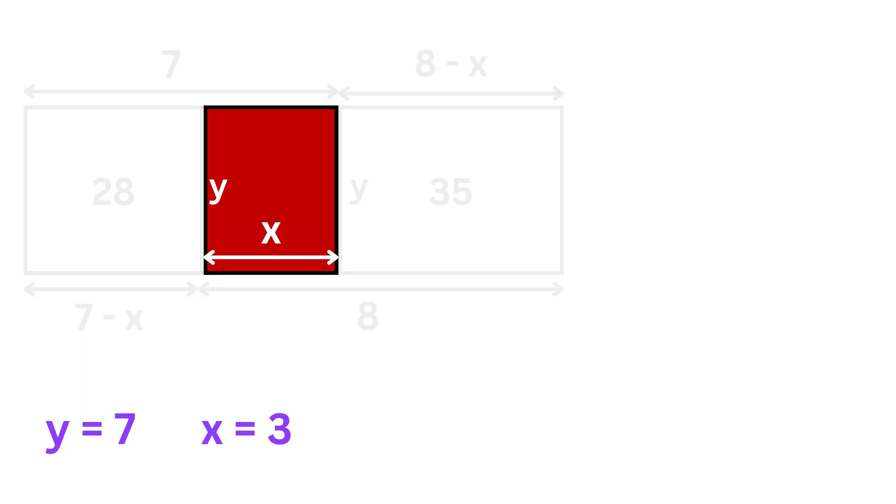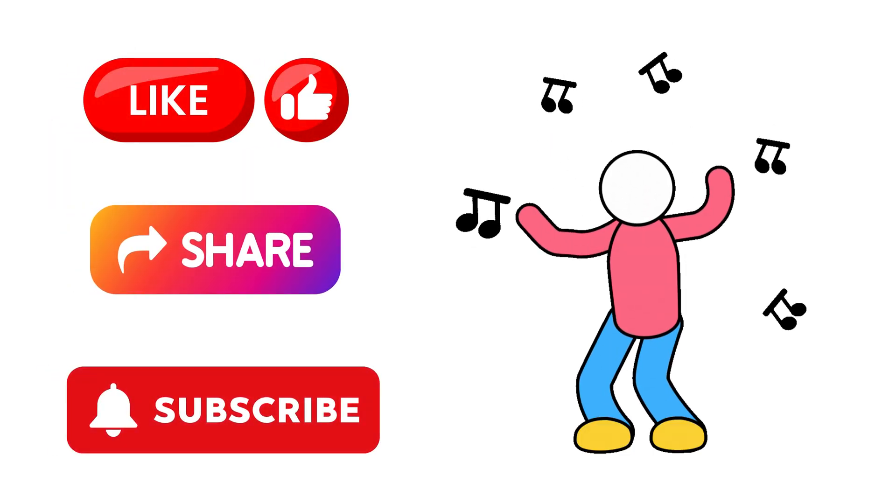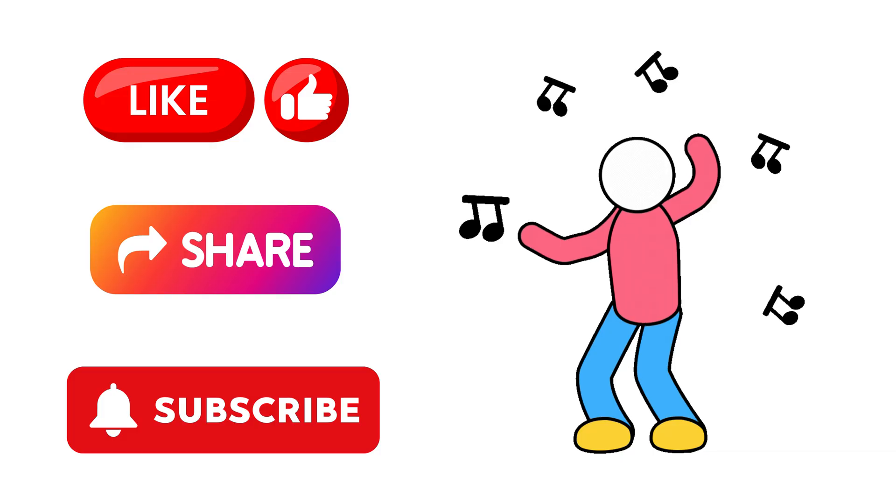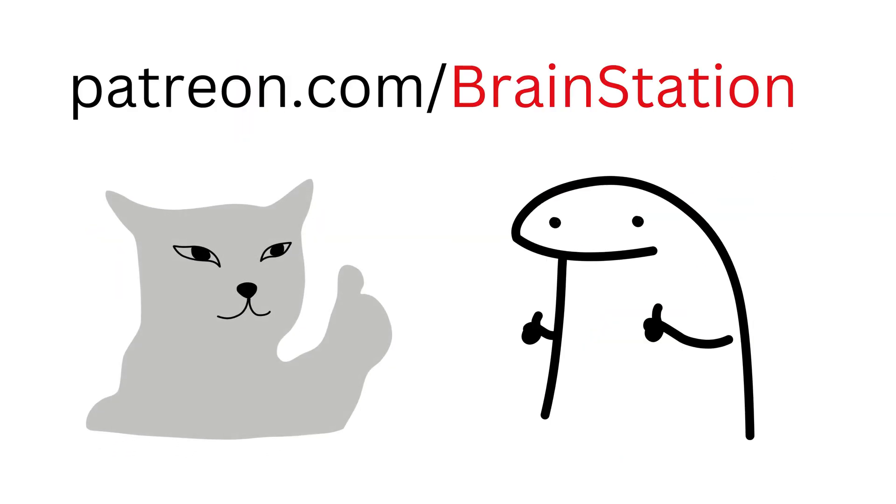Now, to find the area of the middle rectangle, we again use the same formula, length times width. So area equals x times y, which means 3 times 7 or 21 square units. And that's it. If you enjoyed this video, share it with someone you care about and make learning a daily habit.